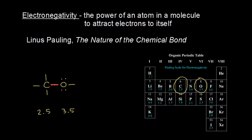Since electrons are negatively charged, oxygen gets a little bit more negative charge, giving it a partial negative charge. The partial sign is a lowercase Greek letter delta. We can also show the movement of electrons closer to the oxygen with a dipole arrow, which points in the direction of electron movement.